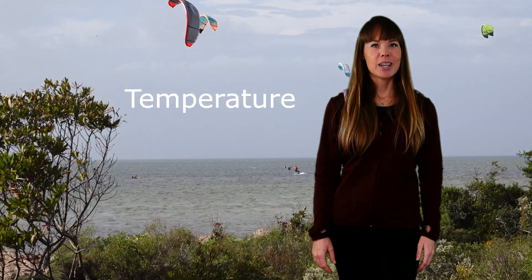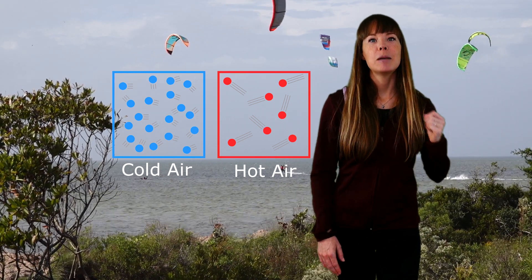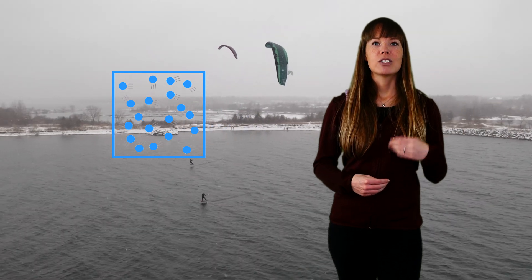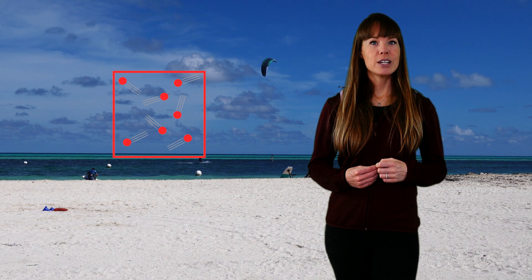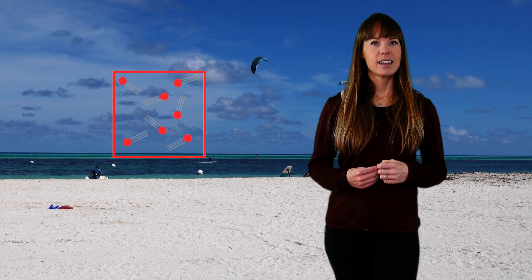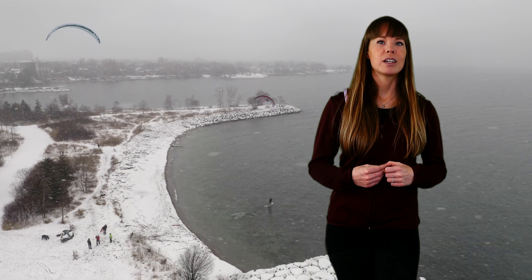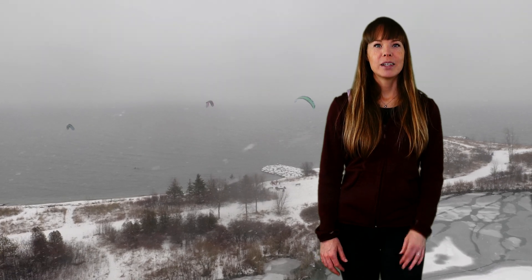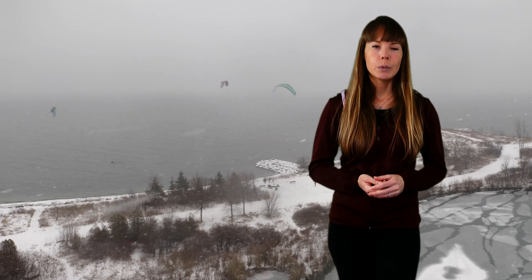Now let's talk about temperature. As the temperature decreases, the air density goes up, meaning more power in your kite. Looking at extreme examples, air at minus 20 degrees Celsius is about 20% denser than air at plus 30 degrees Celsius. 10 knots of wind in Florida is therefore not the same as 10 knots of wind up north in Canada in February. Temperature is the main reason why a lot of Canadians call Caribbean winds fluffy, as they just don't deliver the same punch as those cold Canadian winds.